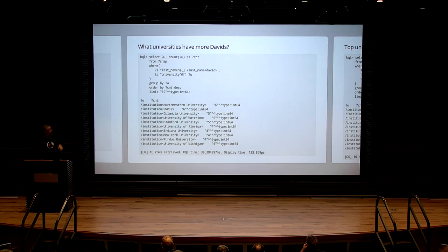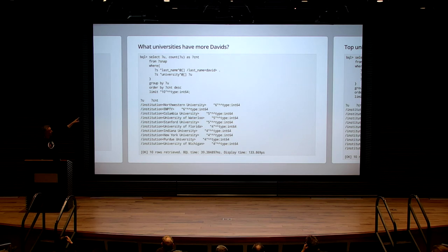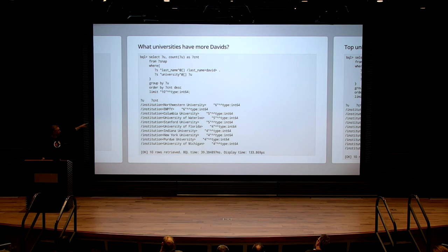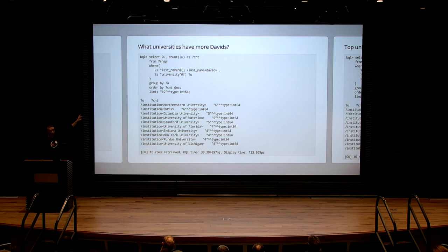Another pressing question: which universities have the most Davids? To do that, in the WHERE clause I start with 'last name: David' as a node in the graph, get all the profile IDs with that last name, then for all those profile IDs look at which universities they belong to — then SELECT, COUNT, SORT, and limit to the top 10. Northwestern is the university with the most Davids in the dataset. The important part here is that with those two clauses I'm traversing the graph — I started in a node and I'm traversing the connected graph.